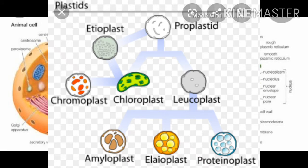Rhodoplasts are red colored and are found in red algae, whereas pheoplasts are brown colored and are found in brown algae.